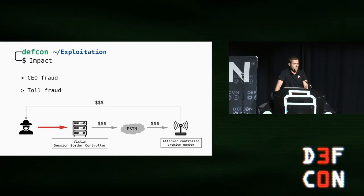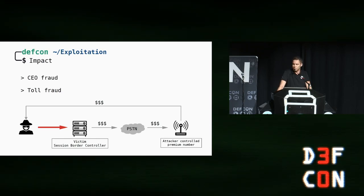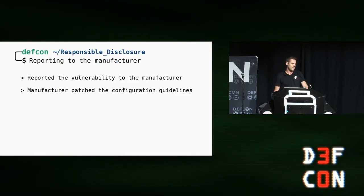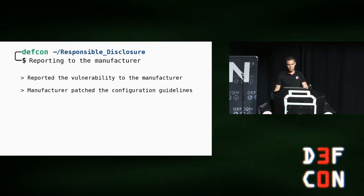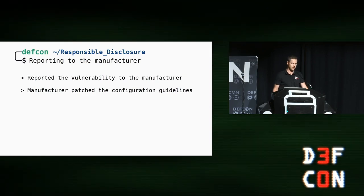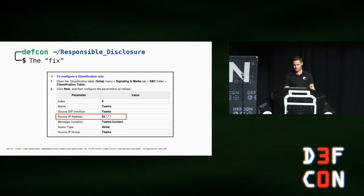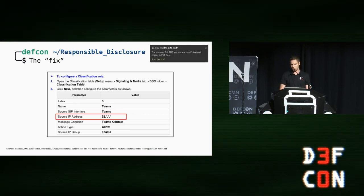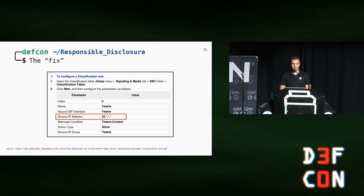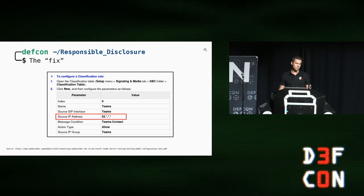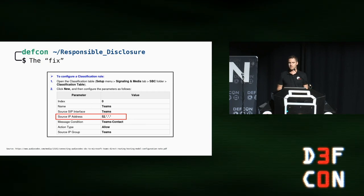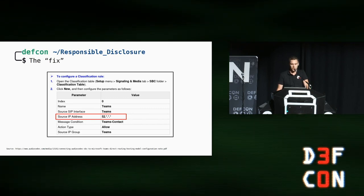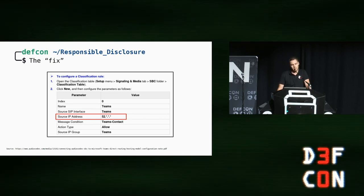As a next step, I reported the vulnerability to the manufacturer, and after a few days I got the response that the configuration guidelines are patched. But when I checked the differences in the configuration guides, I noticed something. The manufacturer added a source IP filter to allow incoming traffic only from a specific source IP range. But when I saw this, I was a little bit surprised about the large range, and therefore wanted to check if this is indeed exclusively assigned to Microsoft. Long story short — it is not.